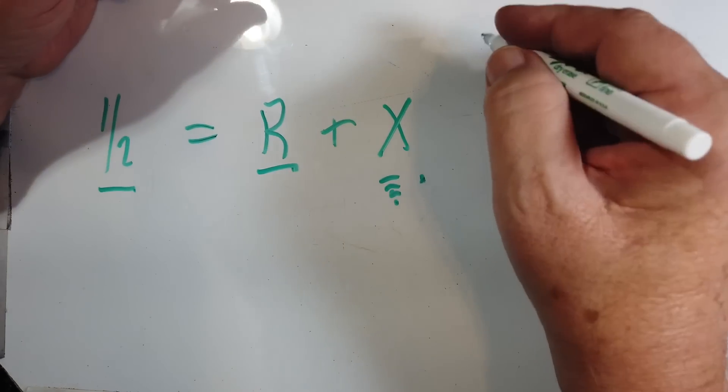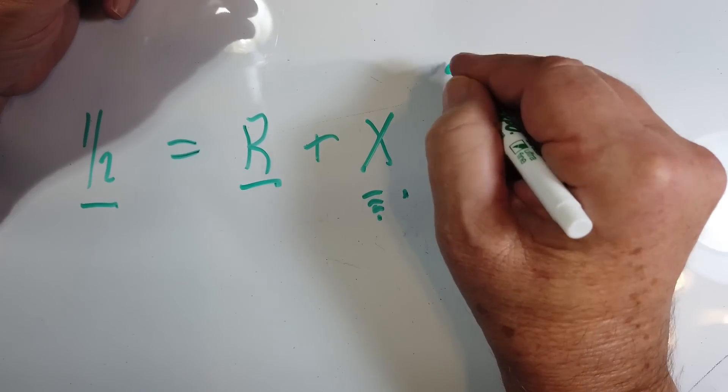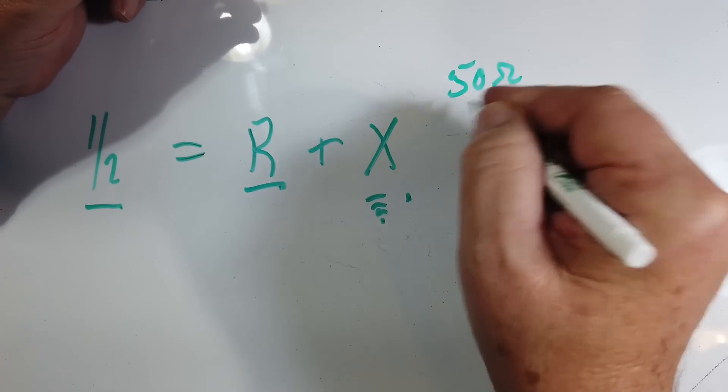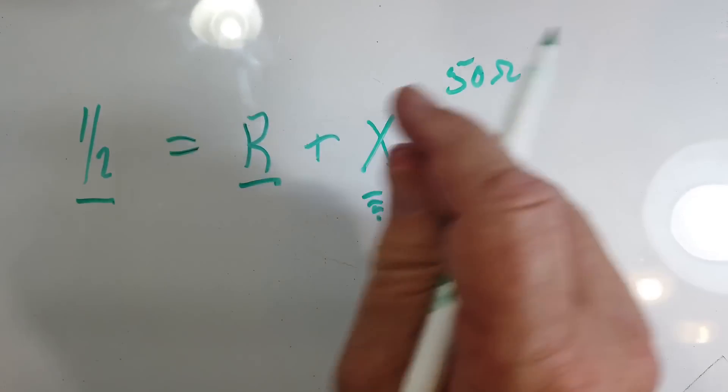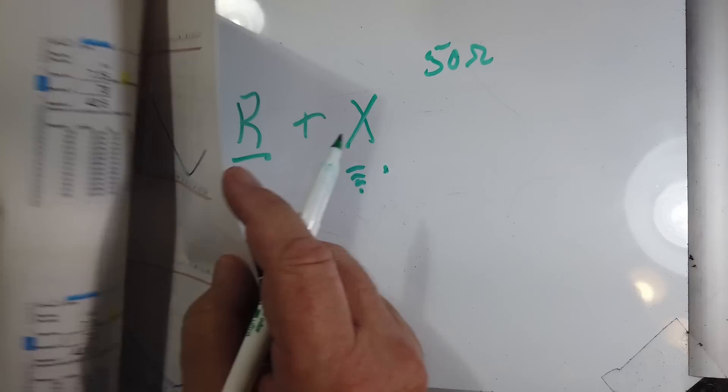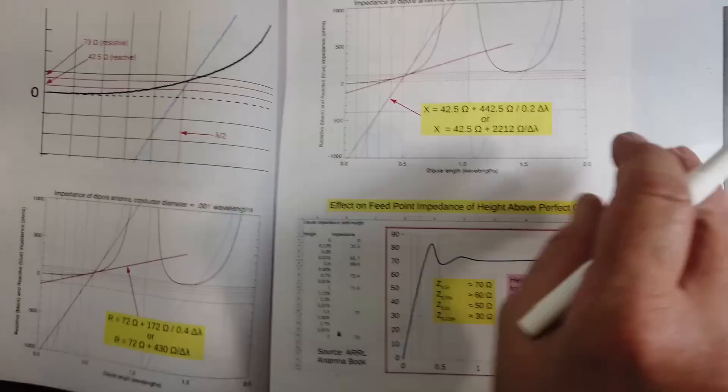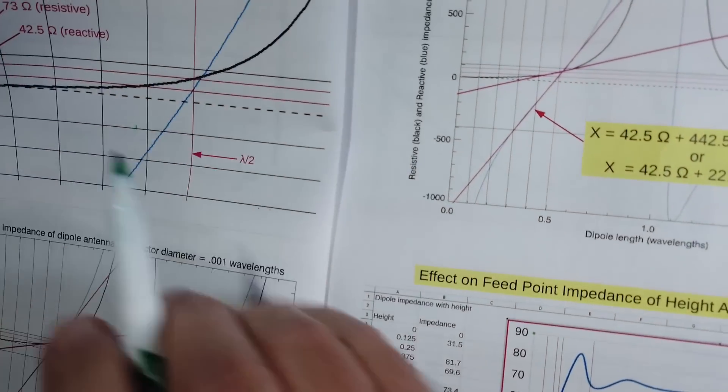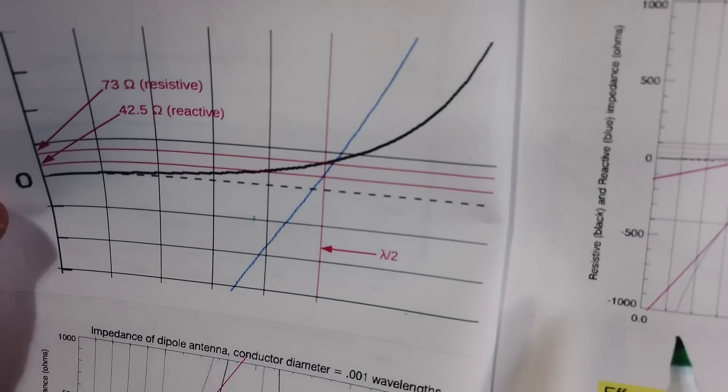So there's two different numbers you want to look at. The 50 ohm point, we may be very hard to find because as I showed in this thing here, a half wavelength actually in free space resonates at about 73 ohms.